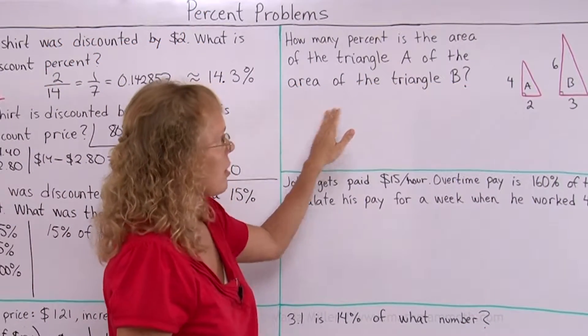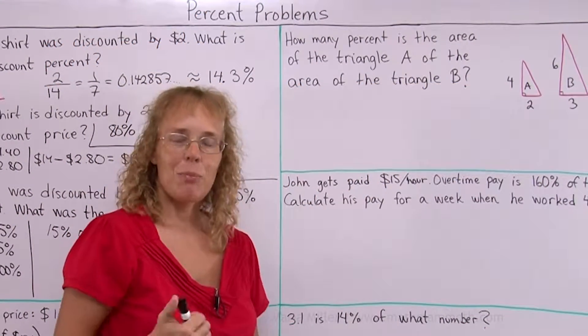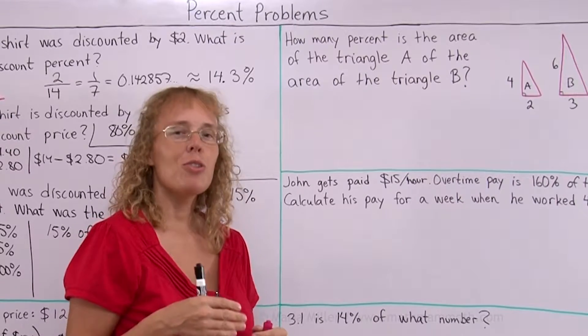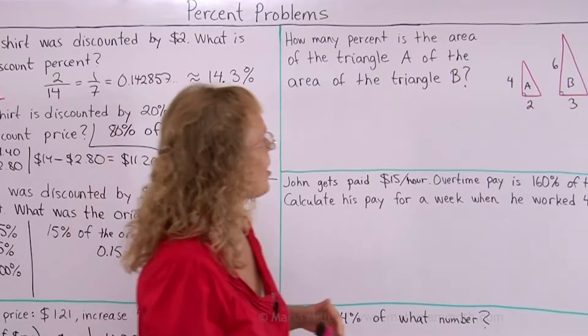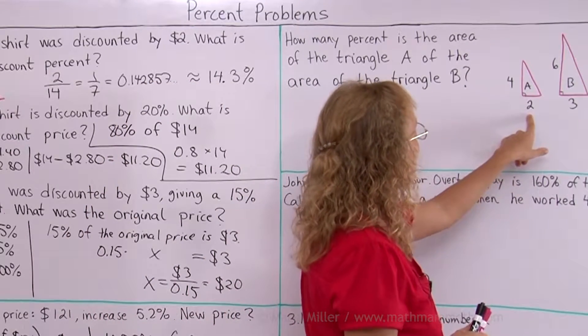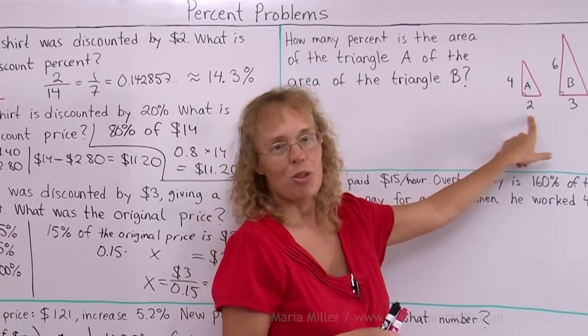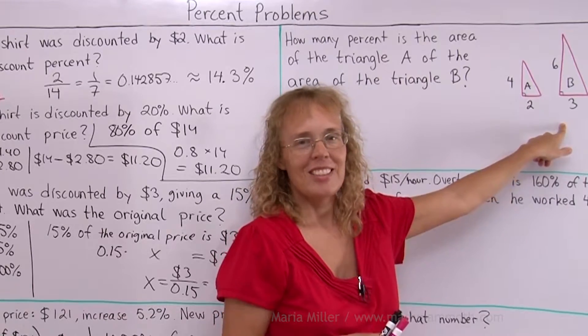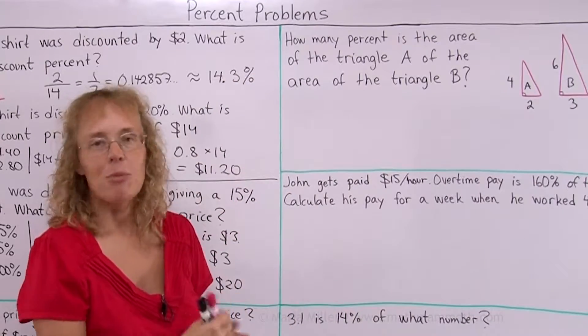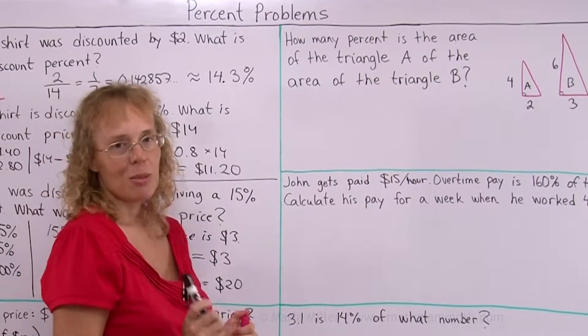How many percent is the area of the triangle A of the area of the triangle B? I first show you a wrong solution. There's a temptation to think that, hey, this side is 2, that side is 3. So this triangle is two-thirds of the bigger triangle, right? Or 67%. But that is not going to be the case.